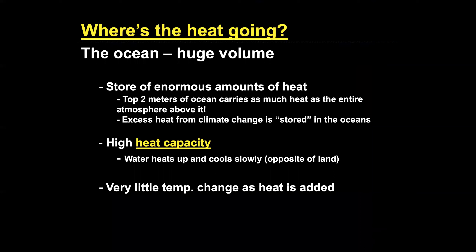It has been argued that the oceans are really the ones maintaining climate change at bay somewhat. The ocean is huge and can store enormous amounts of energy. The top two meters of the ocean can carry as much heat as the entire atmosphere above it — think of it as a giant warehouse. Oceans have what's called a high heat capacity, meaning water heats up slowly but also cools slowly, which is the opposite of land.